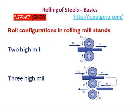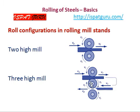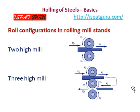In rolling mill stands, the roll arrangement can be two-high mills — in a two-high mill there are two rolls between which the workpiece passes. In three-high mills there are three rolls; the middle roll is normally friction-driven while the top and bottom rolls are driven. The workpiece passes in one direction between the top roll and middle roll, and in the opposite direction between the middle roll and bottom roll. The middle roll acts as a bottom roll for the top pass and as a top roll for the bottom pass.